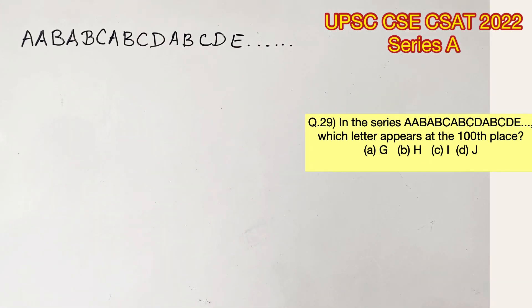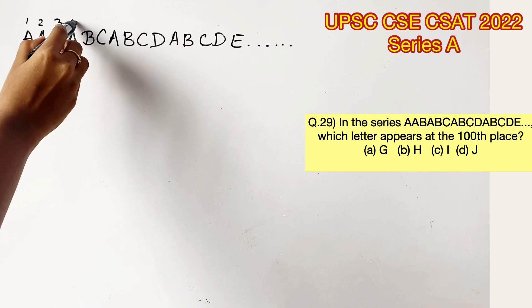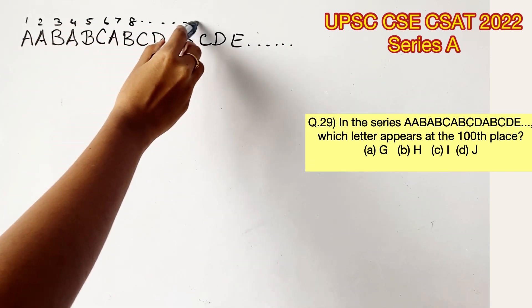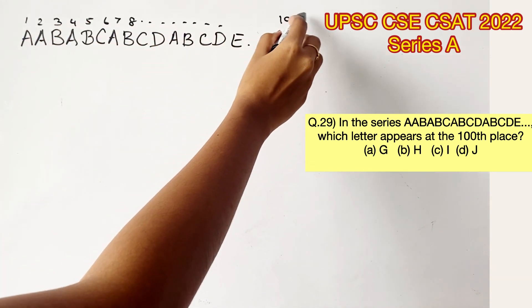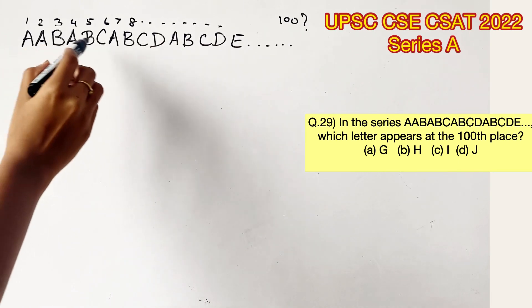Let's first try and understand the logic here. Now, if you mark the positions of the given sequence, this will be 1, 2, 3, 4, 5, and so on. And we are supposed to find the letter in the 100th position. We cannot manually spend our time writing the whole sequence down till the 100th position. Instead of that, let us find the logic here.